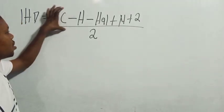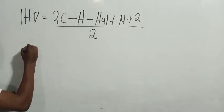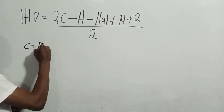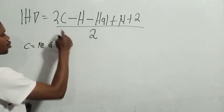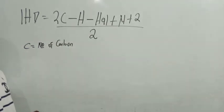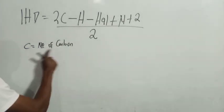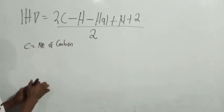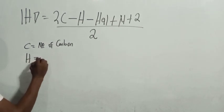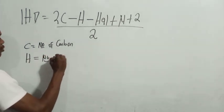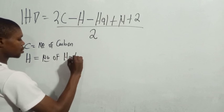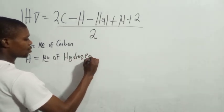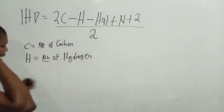Now let's start defining the variables. C equals the number of carbons in the molecule. H is the number of hydrogens.